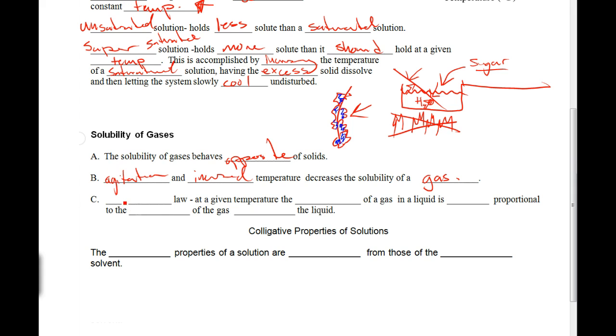The last thing here in Part C is called Henry's Law. He says at a given temperature, the solubility of a gas in a liquid is directly proportional to the pressure of the gas above the liquid.